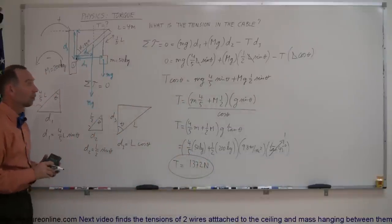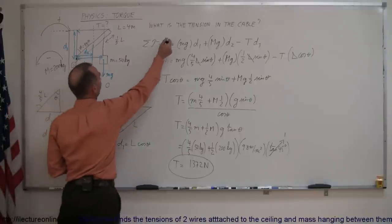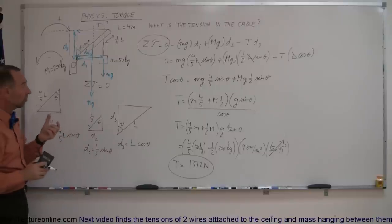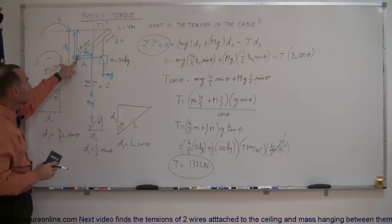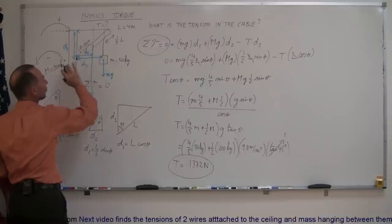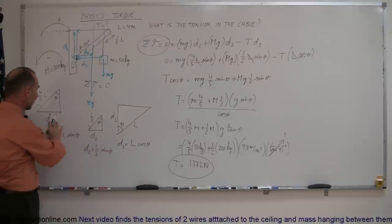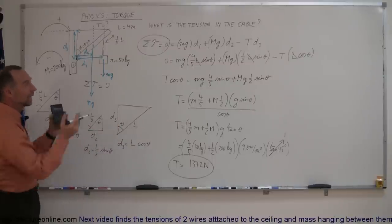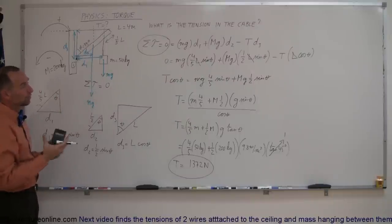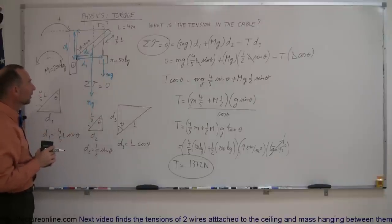That's how you do a problem like that. To summarize: this is a statics problem, so you use the principle that the sum of the torques adds up to zero. Each torque is the force multiplied by the perpendicular distance from the pivot point to the line of action. I always write D1, D2, D3 first, note them on the graph, then draw little triangles to find those distances and plug them in. The rest is simply algebra.